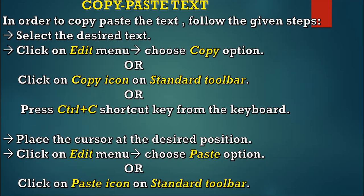One more note on answer formation: 'Click Ctrl+C shortcut key' — is this grammatically correct? No. Whenever we talk about a shortcut key, we never say 'click' — we say 'press.' We have to press the key from the keyboard. So the click word doesn't suit here. The correct formation is: 'Press Ctrl+C shortcut key from the keyboard.'